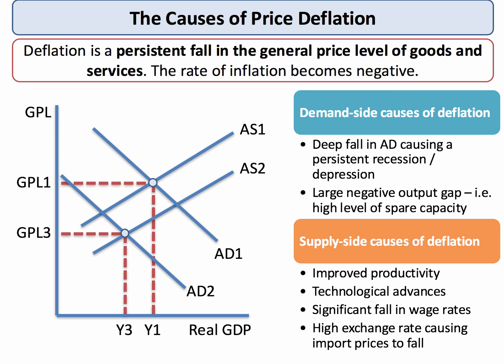The second main cause of deflation can happen on the supply side. In one sense, supply-side deflation is potentially good news for an economy. It could be the case that prices are falling because productivity of labour and capital has improved, bringing down the unit cost of production, or there may have been important technological advances in the production process which have allowed the cost of supply to fall, filtering through to consumer prices.